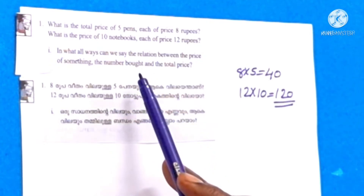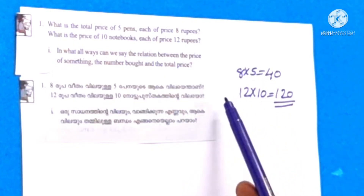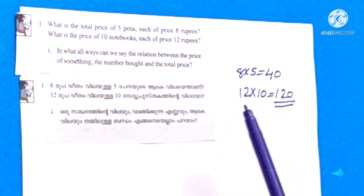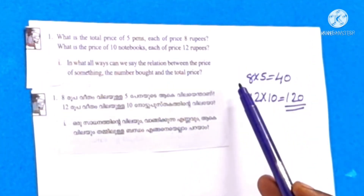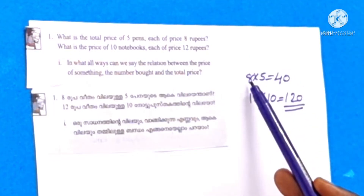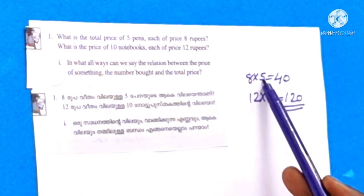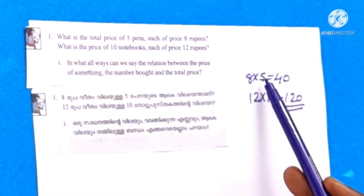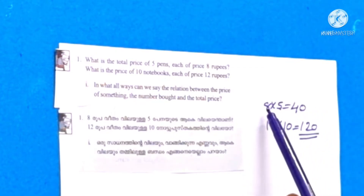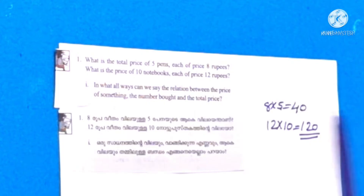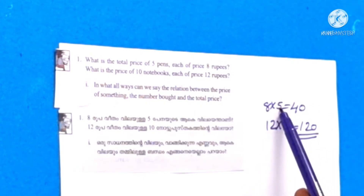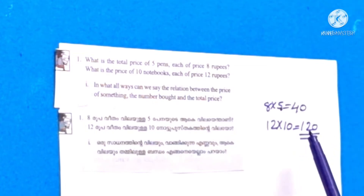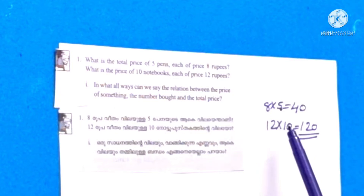The price of something — the number of articles and the price of an article. Dividing the total price by the price of an article, we get the number of articles. Dividing the total price by the number of articles, we get the price of an article.